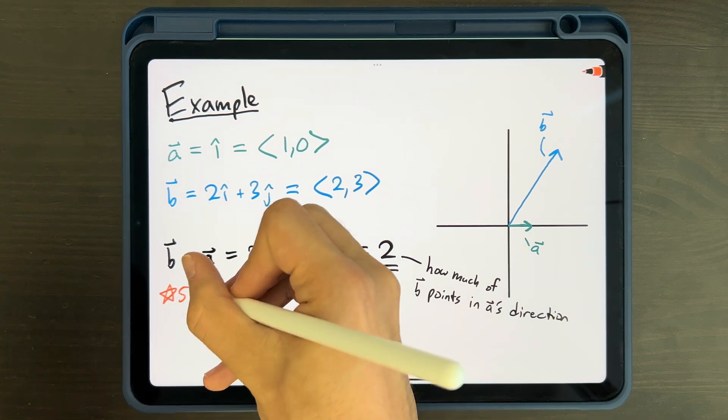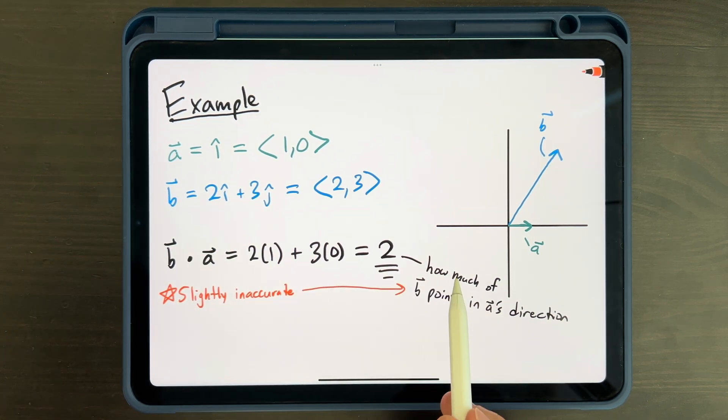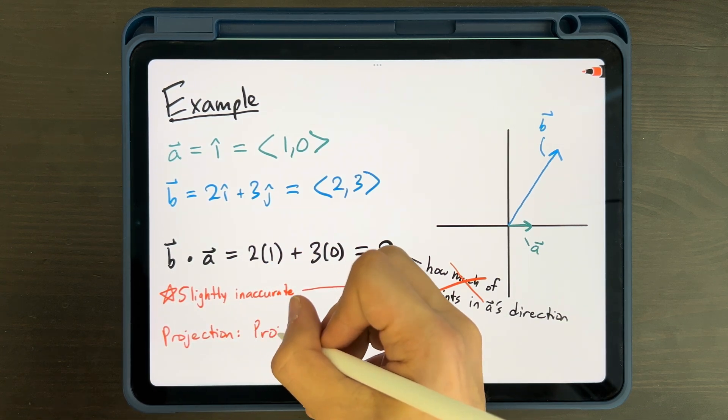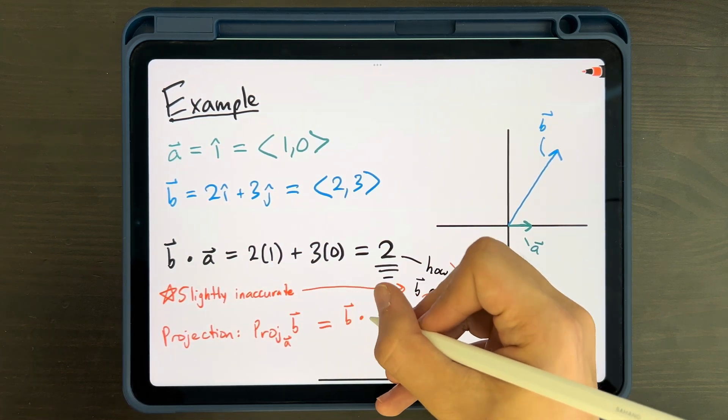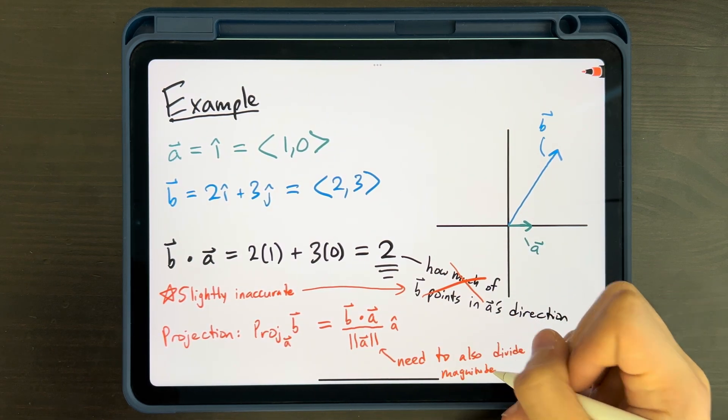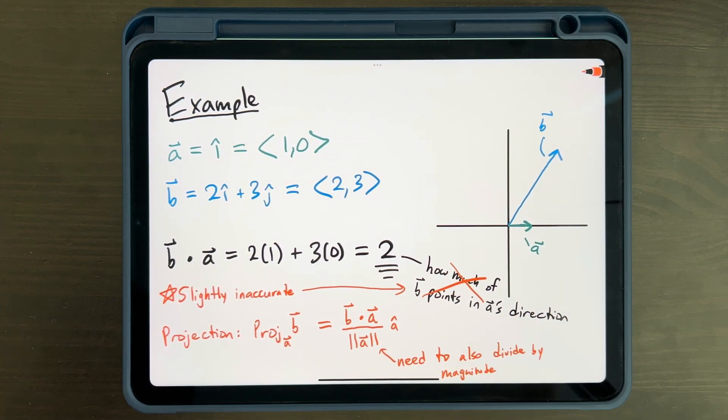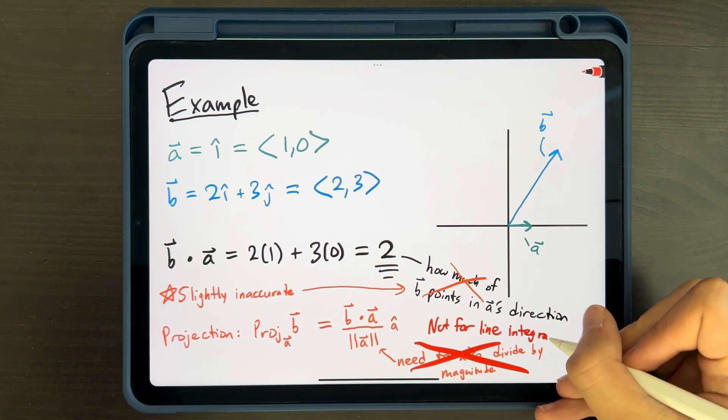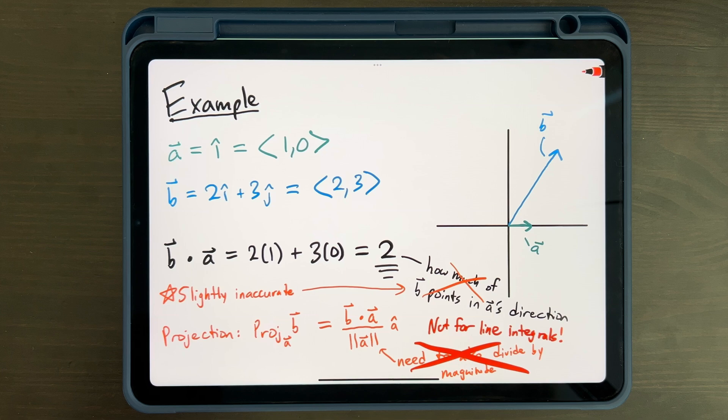Now, this is a bit of an incomplete picture. The real operation that tells us how much of one vector goes in the direction of another is the projection, which involves the dot product, but also requires us to divide by the magnitude of our first vector. However, for our purposes, it's important that we don't divide by the magnitude of the first vector, and we'll see why right now.